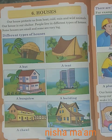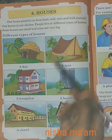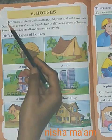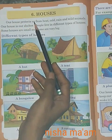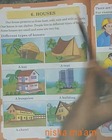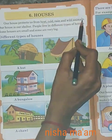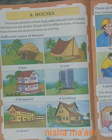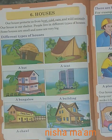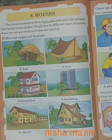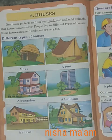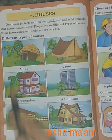So let's see in our book — houses. Our house protects us from heat, cold, rain, and wild animals. हमें हमारा घर किस-किस से बचाता है? Heat यानि के धूप से, cold यानि के ठंडी से, rain means बारिश, and wild animals से भी बचाता है।